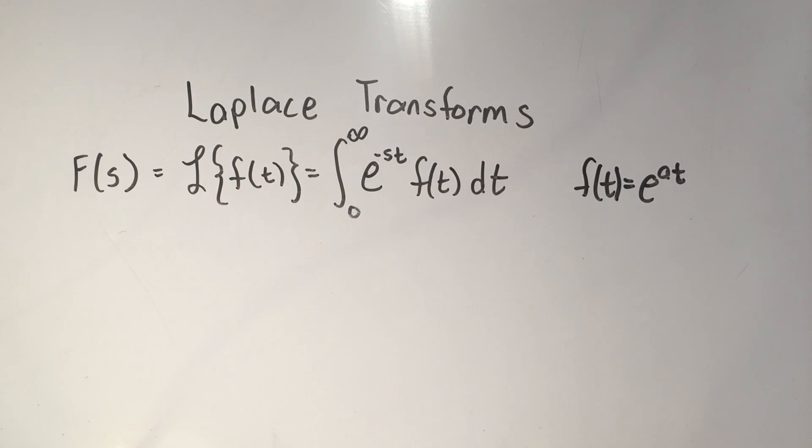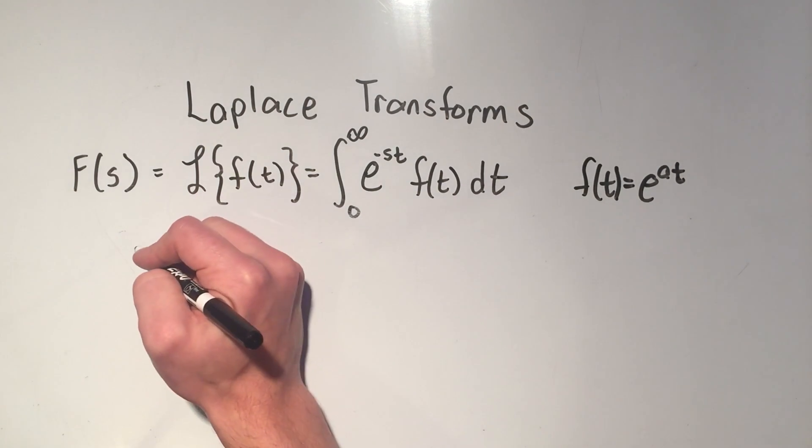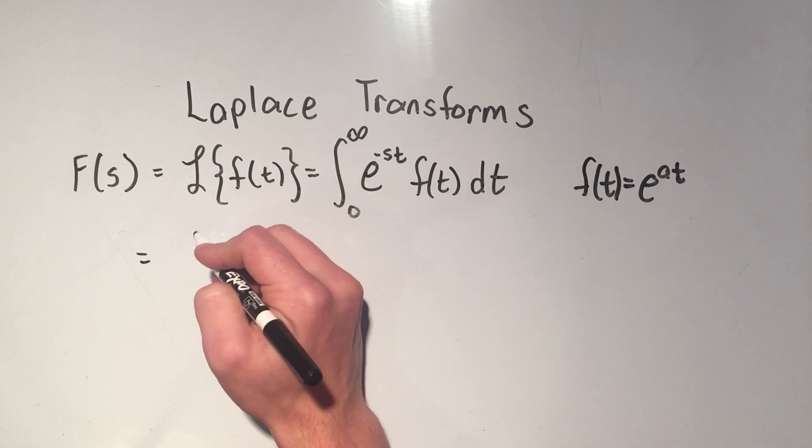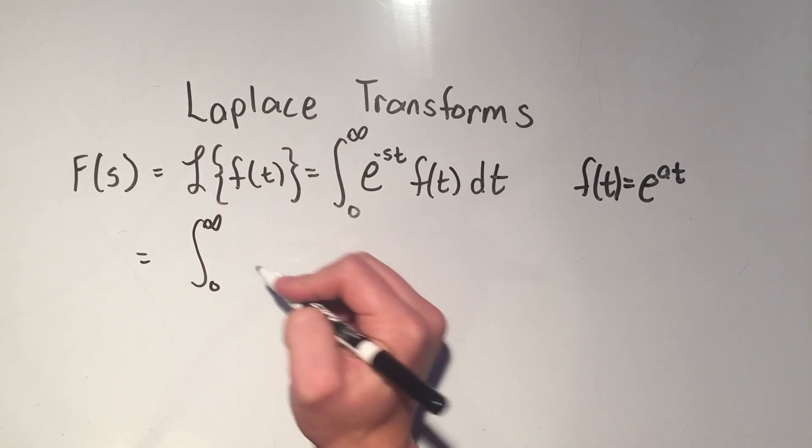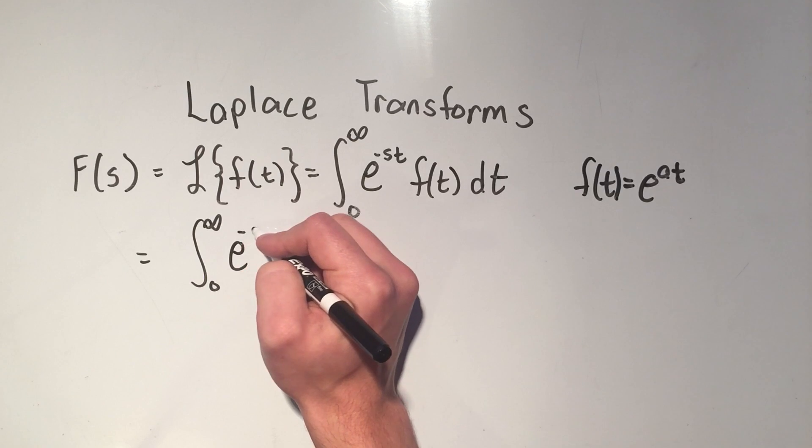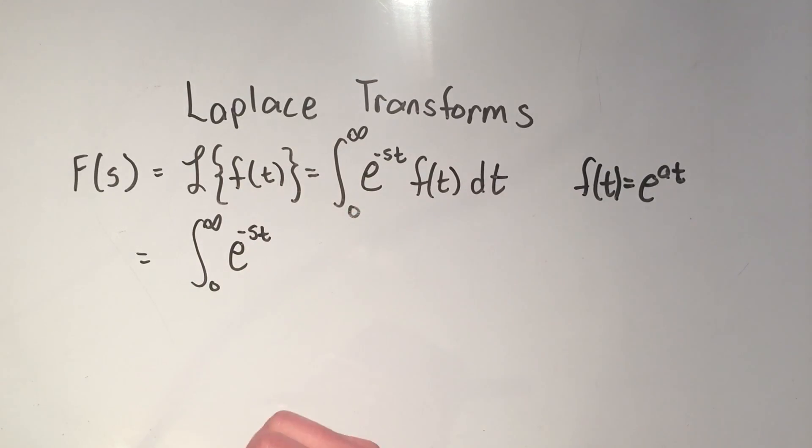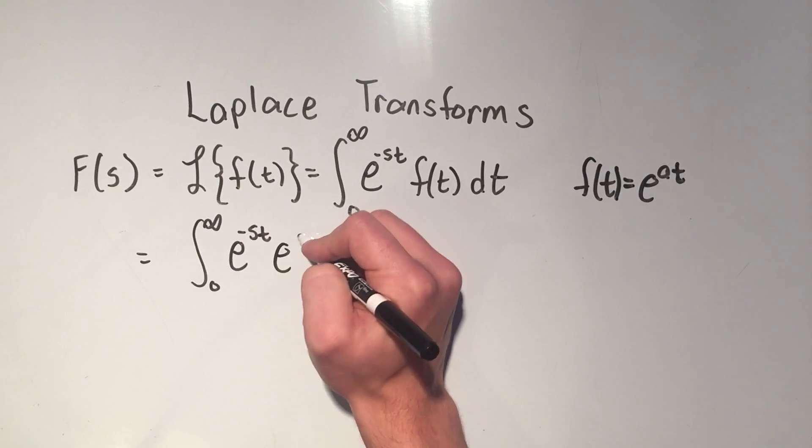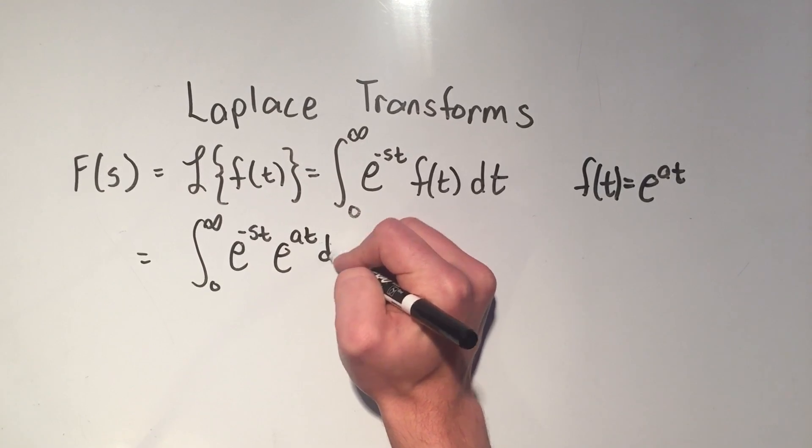So to take the Laplace transform, it's the improper integral from 0 to positive infinity of e to the minus st. And then I stick my function in. So my function is e to the at dt.